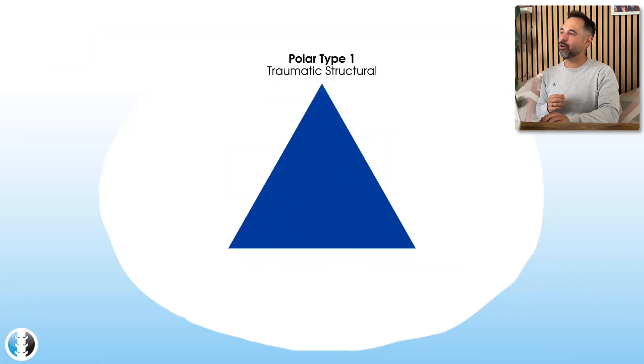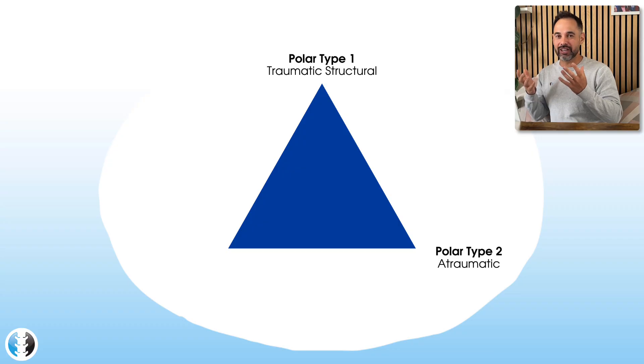Next, let's talk about polar type 2, your atraumatic instability group. So as the name would suggest, these patients have not necessarily had a trauma that has set off their symptoms. Instead, these patients may have a shoulder which is either born loose or worn loose. This is a really good description created by Andrew Jaggi, who's a shoulder instability specialist. And you can think of these patients who have long term changes to the shoulder that have not been caused by an initial trauma.